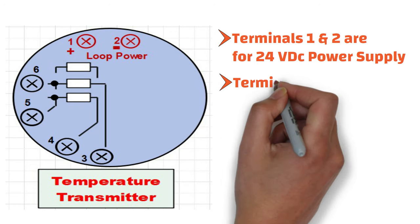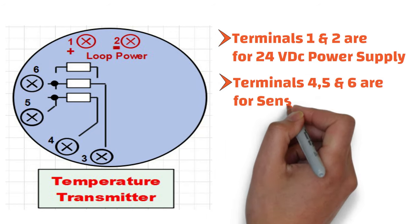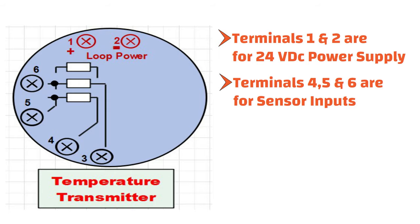And terminals 4, 5, and 6 are for sensor inputs. In this example, terminals 4, 5, and 6 are for RTD inputs.